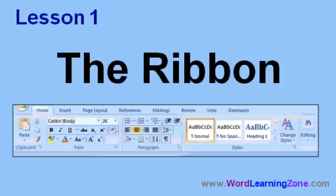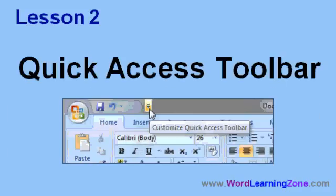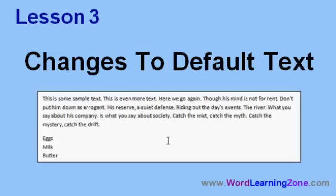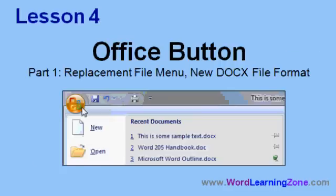We'll begin by learning all about the new ribbon, the menu interface for Word 2007. We'll learn about the Quick Access Toolbar. We'll talk about the changes to default text — if you just sit down and start typing into Word 2007, you might notice some things are a little different than from previous versions. There's lots of new stuff on the Office button, which is the replacement for the File menu, and we'll talk about Word's new .x file format and why it's good for you.